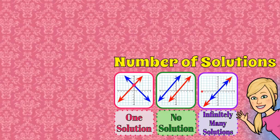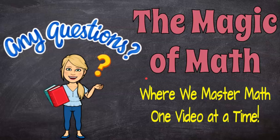So there you have it — that's how you determine the number of solutions to a system of linear equations. You can have one solution, no solution, or infinitely many solutions, and you learned three different ways to determine that: by graphing, solving algebraically, or considering the system in slope-intercept form. Thank you for joining me today at The Magic of Math, where we continue to master math one video at a time. Have a great day and come back soon.